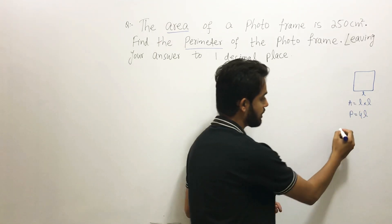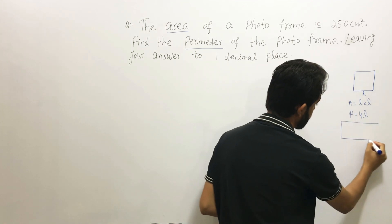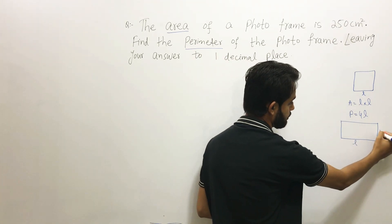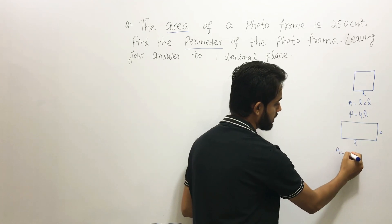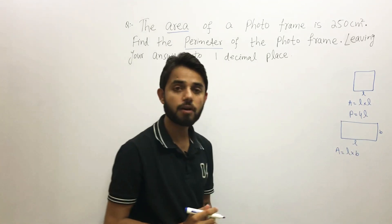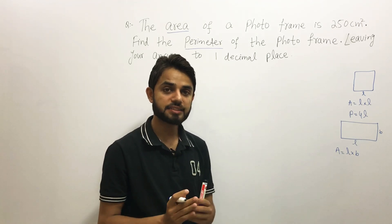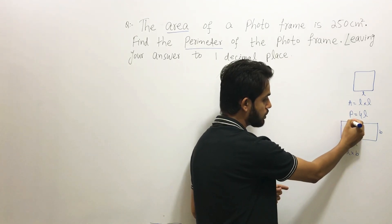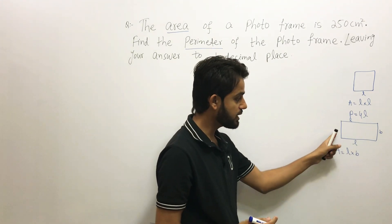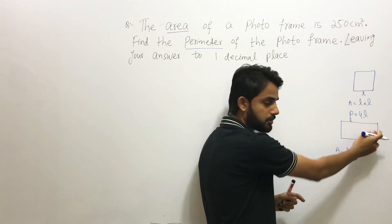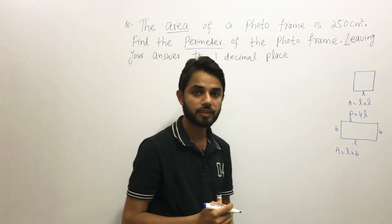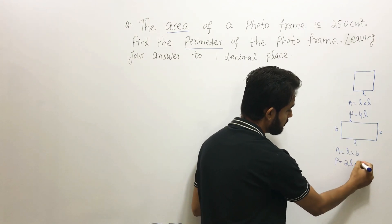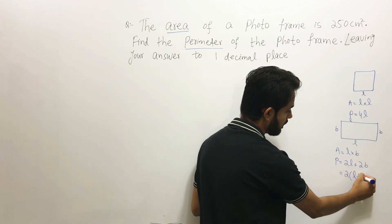For a rectangle with length L and breadth B, the area is L multiplied by B. For the perimeter, since opposite sides are equal — two sides of length L and two sides of breadth B — the perimeter is 2L plus 2B, which can be factored as 2(L + B).